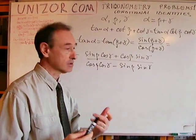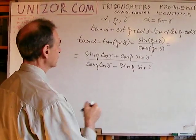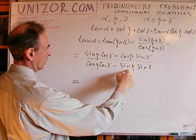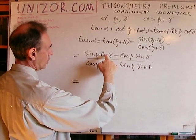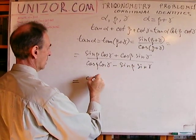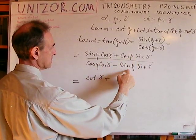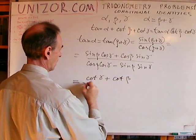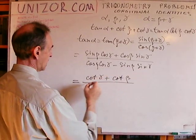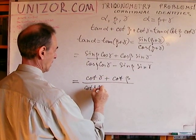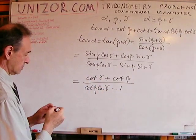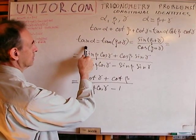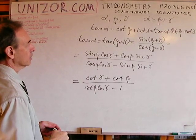Dividing sine cosine by sine sine, sine beta is reduced and I get cosine gamma over sine gamma, which is cotangent gamma. Similarly, the next term gives cotangent beta. In the denominator, cosine cosine divided by sine sine is the product of cotangents, minus one. So: tan(β+γ) = (cotangent γ + cotangent β) / (cotangent β · cotangent γ − 1). I will substitute this expression for tangent alpha in the identity to be proved.